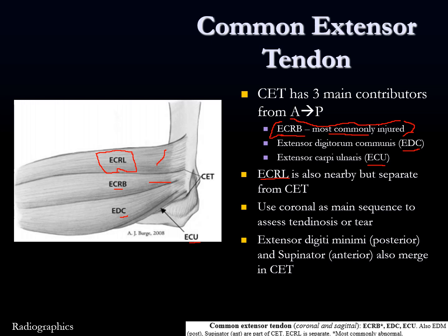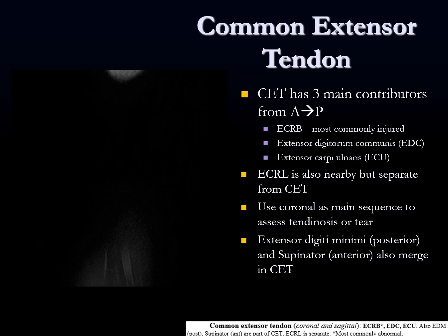A couple of other tendons also merge into the common extensor tendon origin: the posterior part has extensor digiti minimi and the anterior part has supinator. There's a lot of anatomy to get down, but if you read these on a routine basis it's good to know what's on the margins of the common extensor tendon insertion, or you just look it up. Let's look at these on the scrollable images to see if it makes more sense.